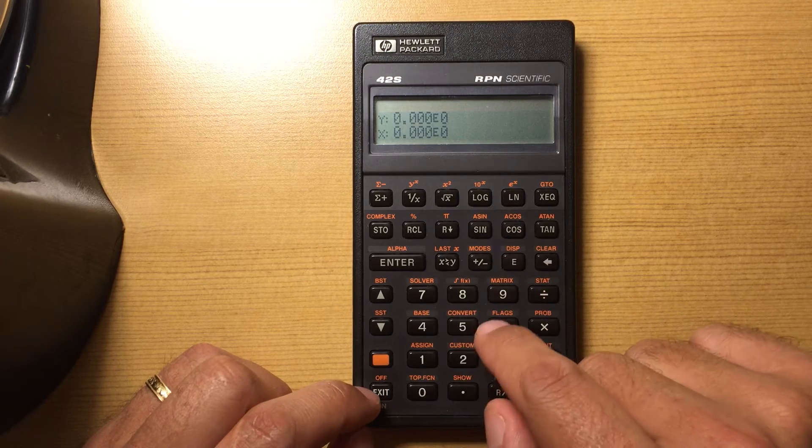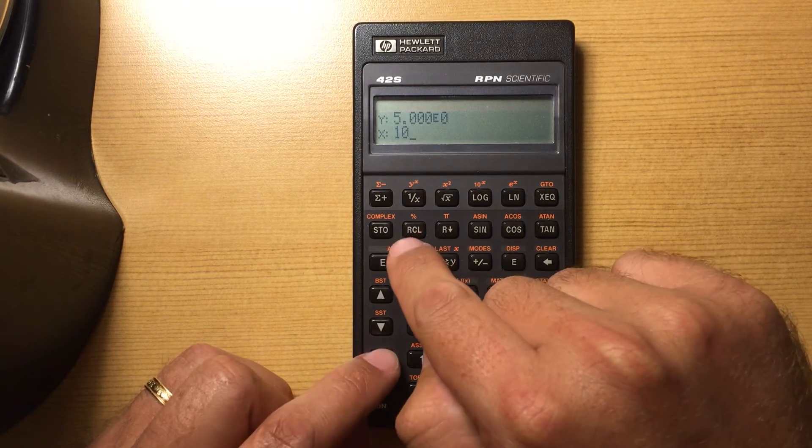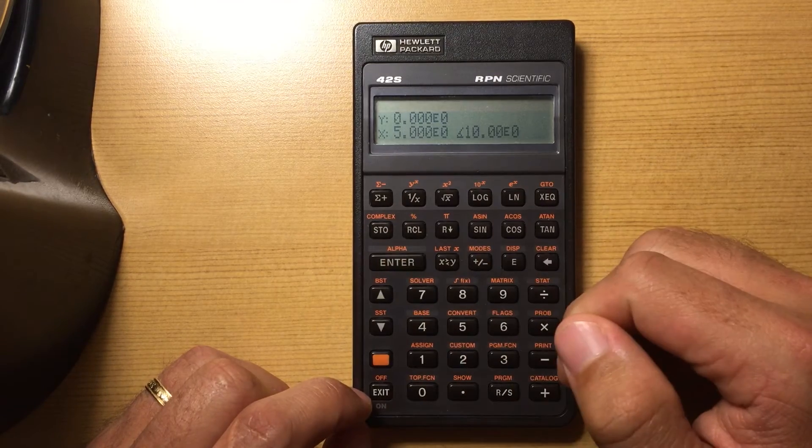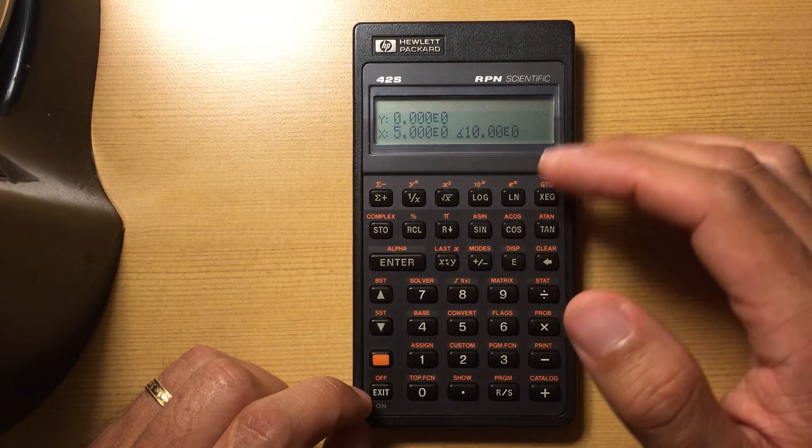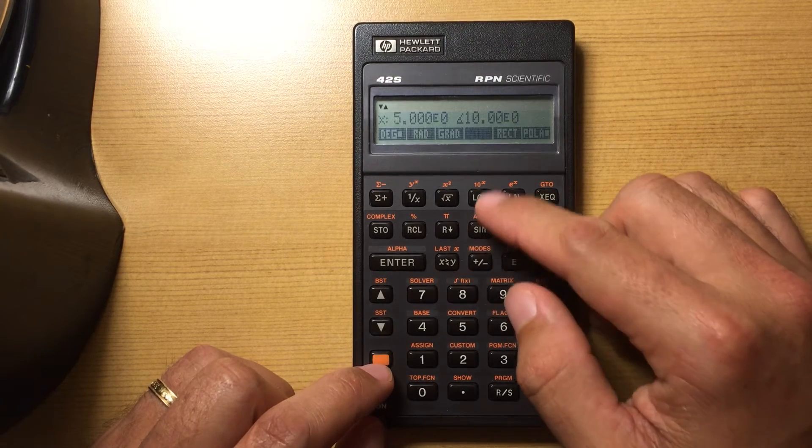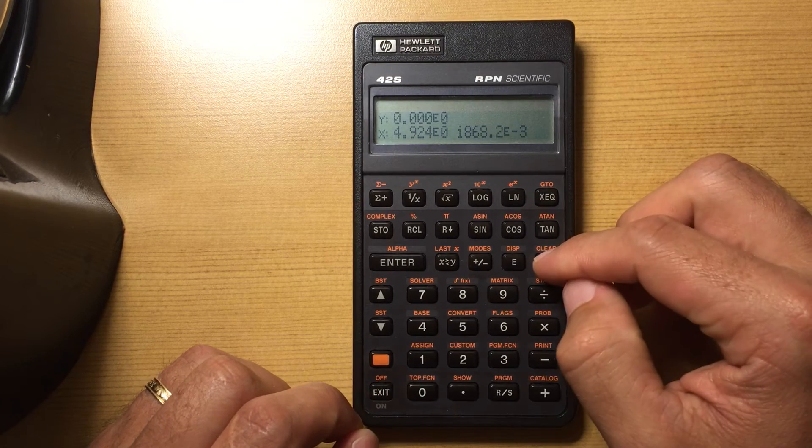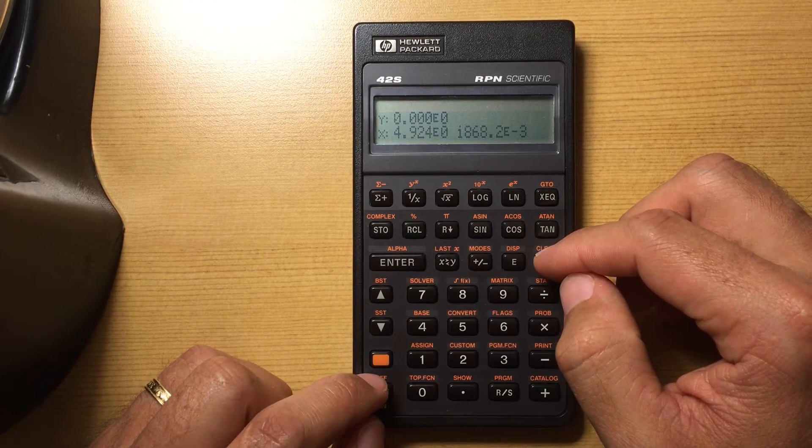You can shift, enter in a complex number, 5, enter 10, shift to complex. Now I'm in polar mode, so it gave me the angle in polar. The ability to quickly shift between modes, I mean that's all pretty necessary on a calculator.